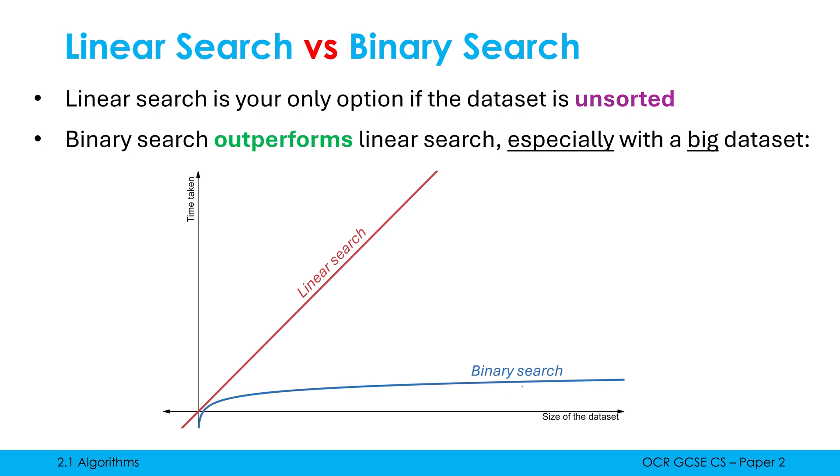In fact, binary search is barely affected by the size of the data set increasing. This is because we can eliminate half of it in just one step. If I've got a billion items in my data set, binary search eliminates half a billion in one go. Then it eliminates a quarter of a billion in the next go and so on. Whereas linear search would have to trundle through that half a billion and it would be a lot slower. So you want to use binary search, it just needs to be sorted beforehand.